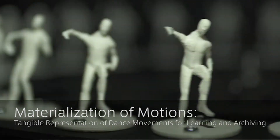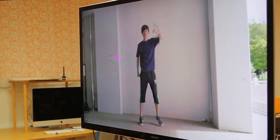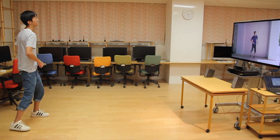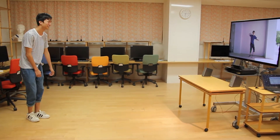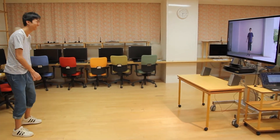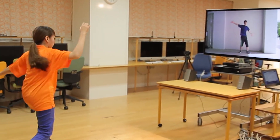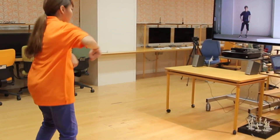Materialization of Motions: Previous methods to achieve and learn dancing rely on records composed of two-dimensional information, without three-dimensional information such as spatial data. Excluding spatial information limits the understanding of dance choreography.